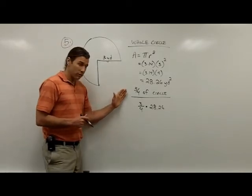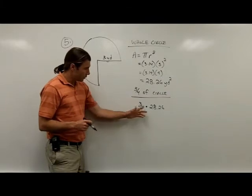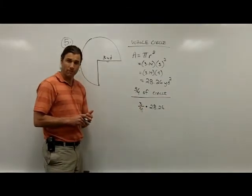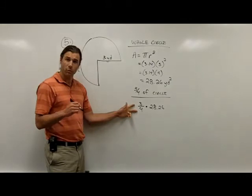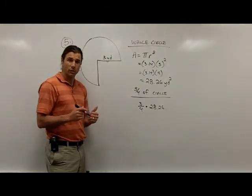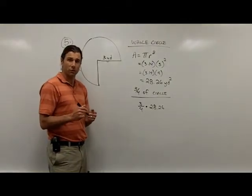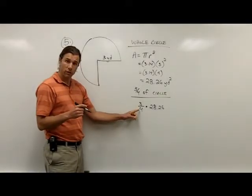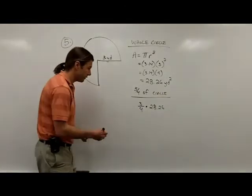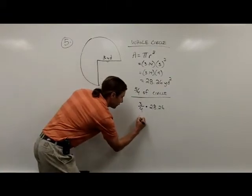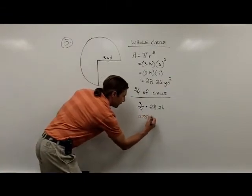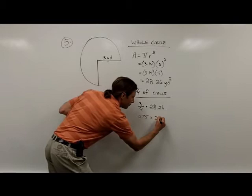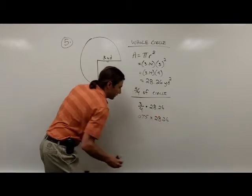So to find 3/4 of the circle, I'm going to take 0.75 times 28.26. Some of you may already be familiar that 3/4 is actually 0.75 when changed to a decimal number. If you're not familiar with that, all you need to do is divide 3 by 4 and that will give you that 0.75.